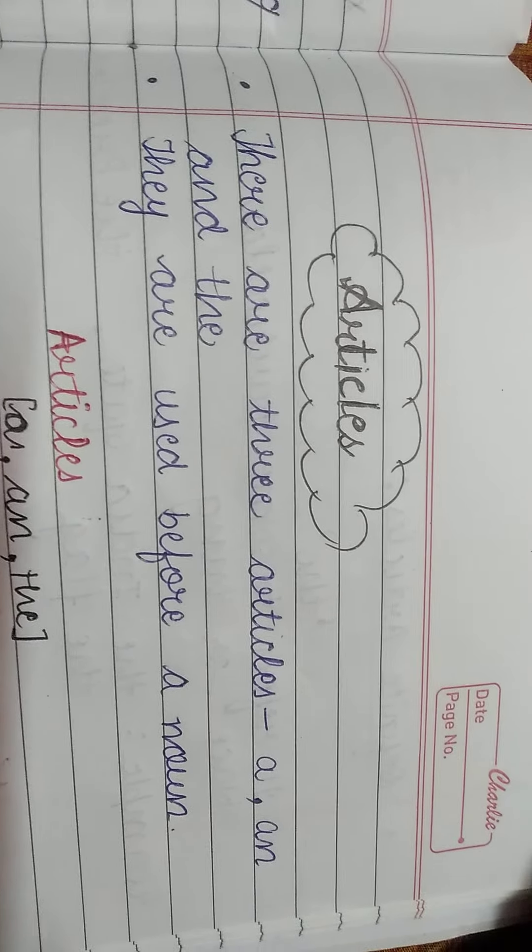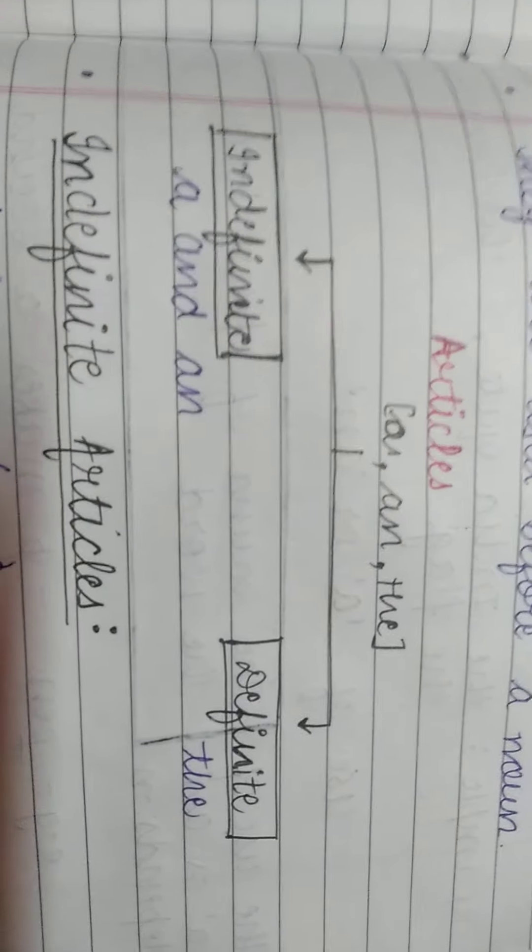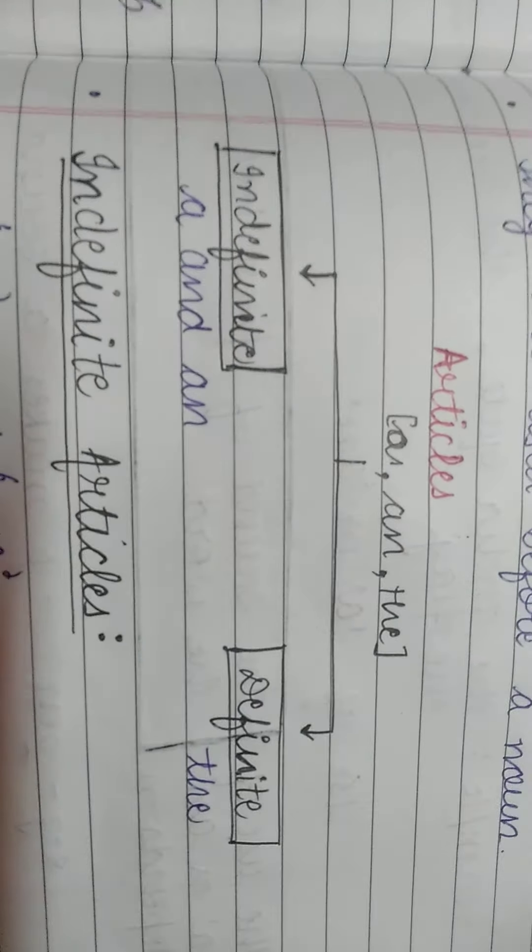There are three articles: A, An, and The. A, An, and The are articles. They are used before a noun. How do we use this? Before a noun. There are two types of articles.